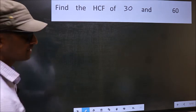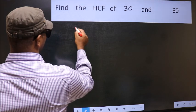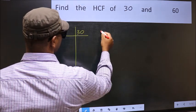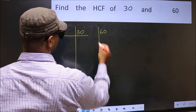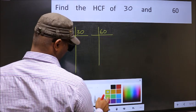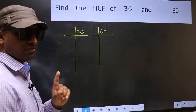What I mean is 30 and 60. This is your step 1.